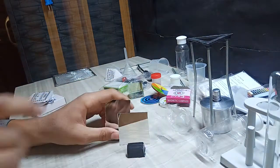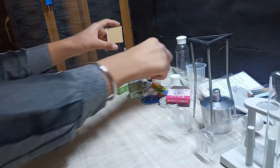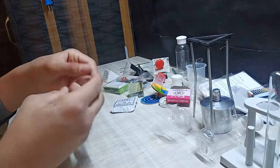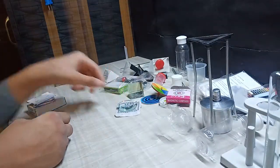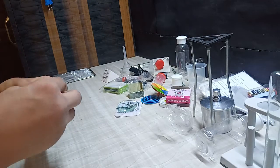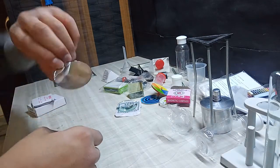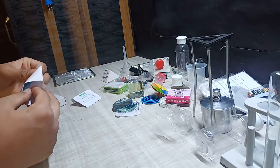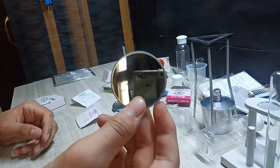These are the two mirrors with holders. These are the lenses, different kinds of lenses. This is the convex lens as you can see through it. This is the concave mirror, this is the convex mirror.